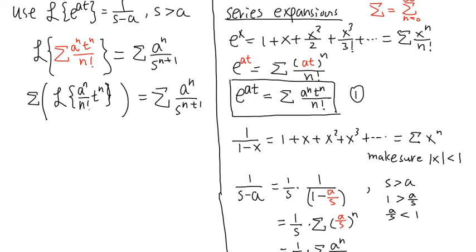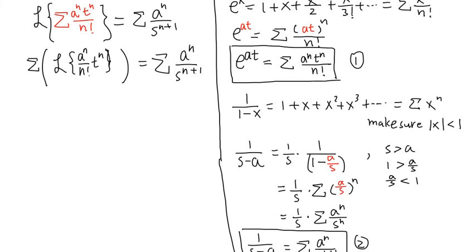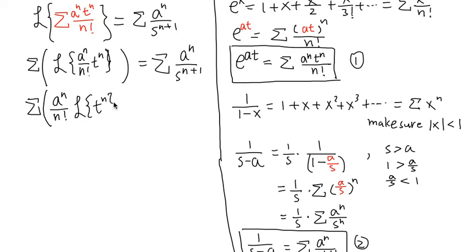After switching the sum and the Laplace, the left side becomes the summation of a to the n power over n factorial times the Laplace of t to the n power. This equals the summation of a to the n power over s to the n plus 1 power. Since a to the n power over n factorial is a constant in the Laplace world, we can bring it outside the Laplace transform.